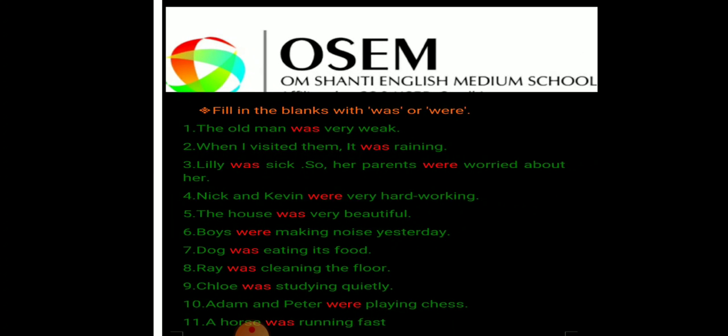Now let's see the other examples also — fill in the blanks with was or were. First: The old man was very weak — old man, singular noun. Second: When I visited them, it was raining — it, singular. Third: Lily was sick, so her parents were worried about her — Lily is a singular noun and her parents is a plural noun, that's why were.